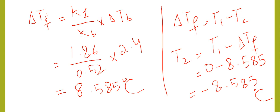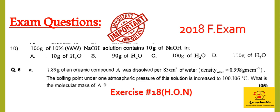Now the last important part of this video lecture: exam questions. 2018 final exam — a 10 percent weight by weight solution contains 10 grams of sodium hydroxide per 100 grams of solution. So if 10 grams is NaOH, then 90 grams is water.